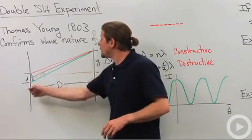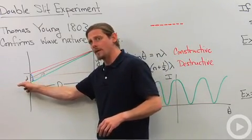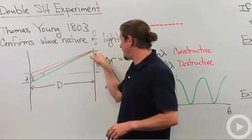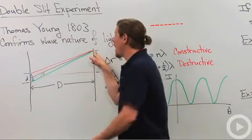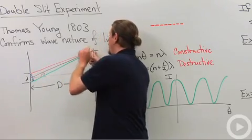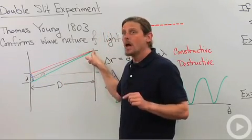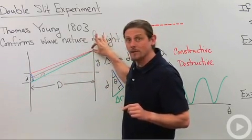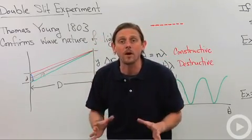So when you look, you've got some light that's going to come from here and going to go over and meet at the screen here and some light that's coming from the top slit. And it'll come up and hit the screen here. Now, these two bits of light are going to interfere with one another.